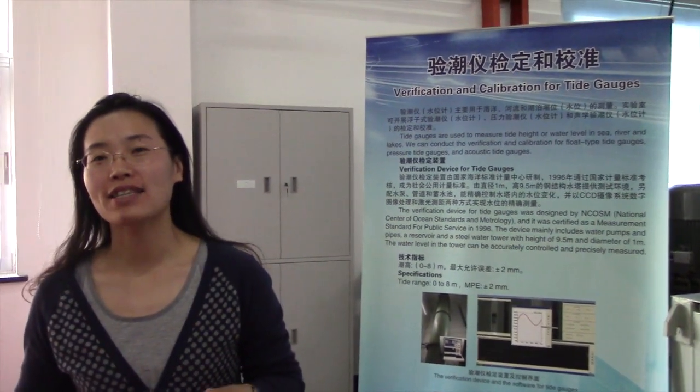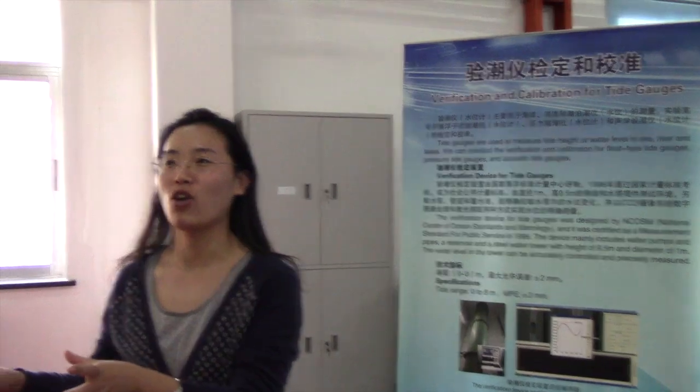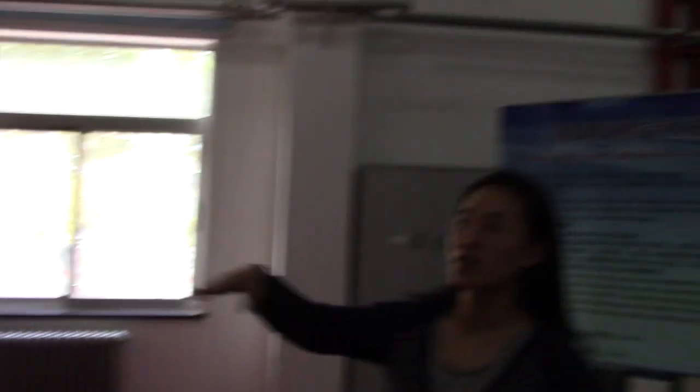In this lab, we calibrate tide gauges. Tide gauges are used to measure water level in the sea, rivers, and lakes. The main part of the calibration device is this steel water tower, which has a diameter of 1 meter and is 9.5 meters high. The water level in the tower can be accurately controlled and measured precisely. The measuring range is from 0 to 8 meters, with an MPE of ±2 millimeters.